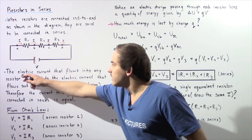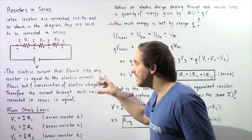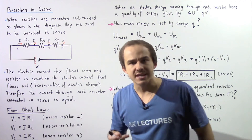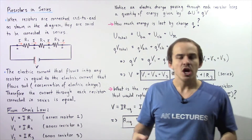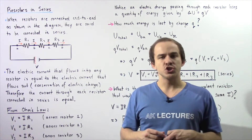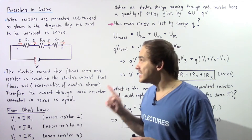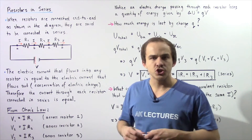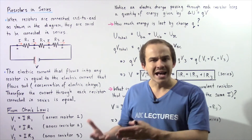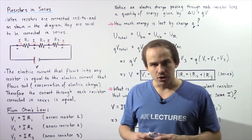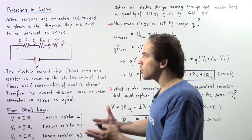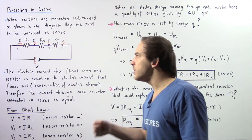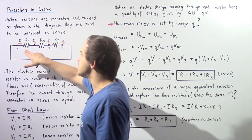Notice that the electric current that flows into any resistor is equal to the electric current that flows out of that same resistor, and that's because we have the conservation of electric charge. Our resistor doesn't actually consume or destroy any of that electric charge — it simply allows the passage of electric charge. So the electric current that goes into resistor 1 is equal to the electric current that comes out of that same resistor 1.